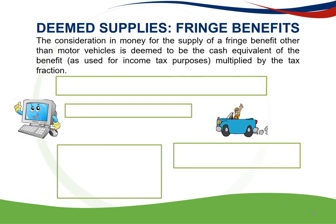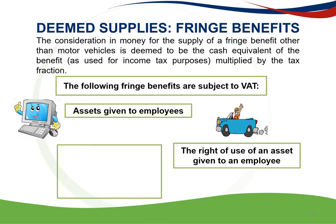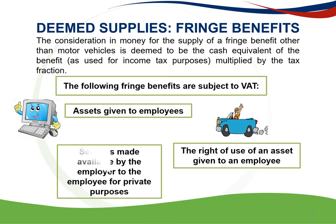Regarding fringe benefits: the consideration in money for the supply of a fringe benefit other than motor vehicles is deemed to be the cash equivalent of the benefit as used for income tax purposes, multiplied by the tax fraction. The following fringe benefits are subject to VAT: assets given to employees (only those given free of charge or at a low rate, with no VAT applicable to assets for entertainment, zero-rated or exempt supplies, or motor vehicles), the right of use of an asset given to an employee (such as the use of a company car), and services made available by the employer to the employee for private purposes.